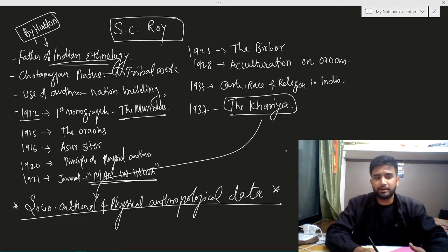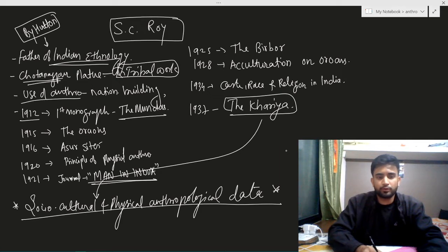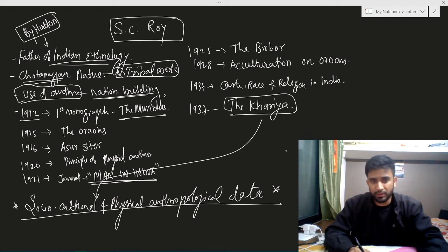Hutton called S.C. Roy the father of Indian Ethnology. His main area of focus was Chhota Nagpur Plateau and his area of interest was tribal work. In the later phase of his life, he used anthropology to study the nation building concept, which is actually important.